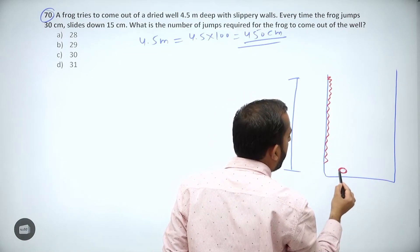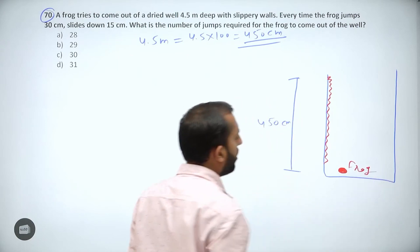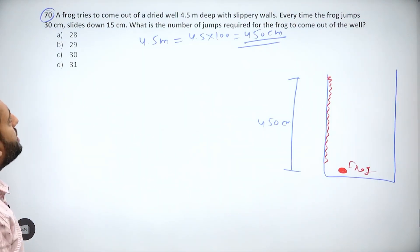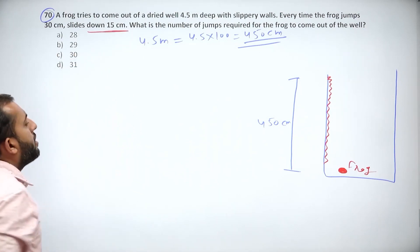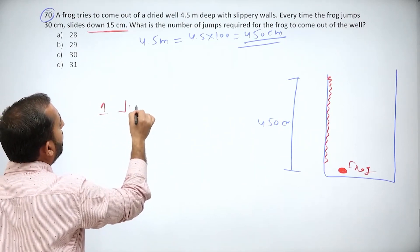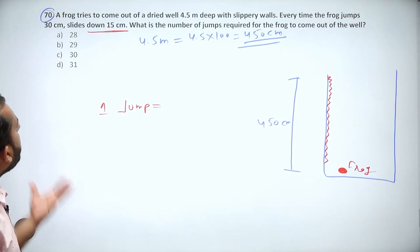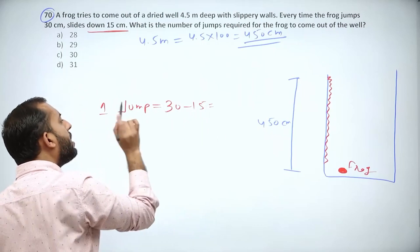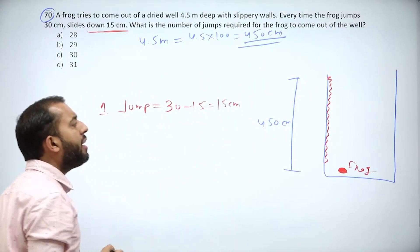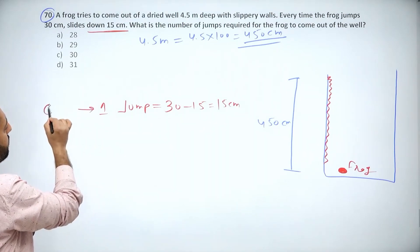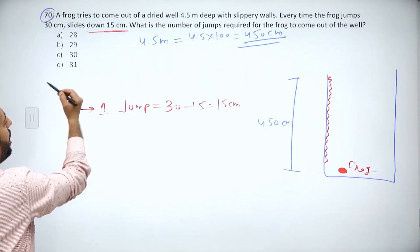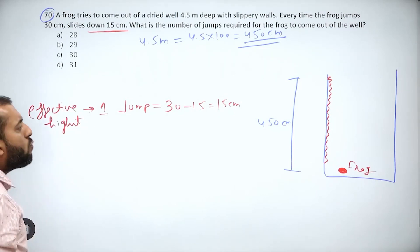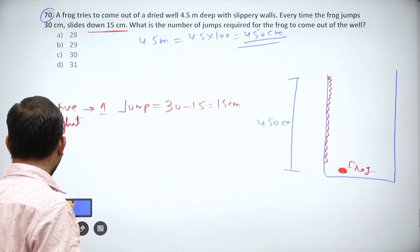The walls are slippery and there is a frog at the bottom. Every time the frog jumps, it achieves 30 centimeters but slides down 15 centimeters. So in the first jump it attains 30 centimeters but slips down 15 centimeters. The effective height achieved in one jump is 15 centimeters.